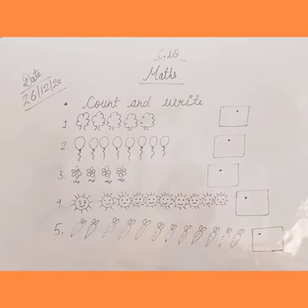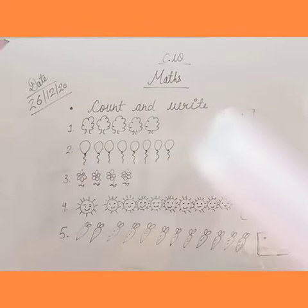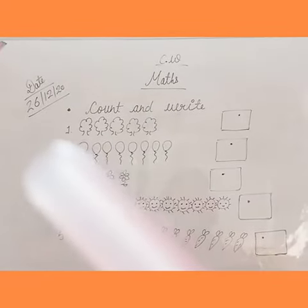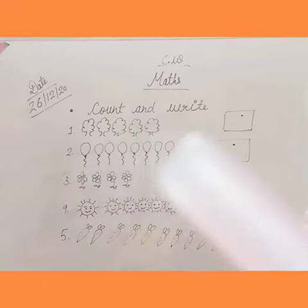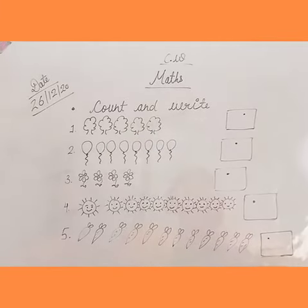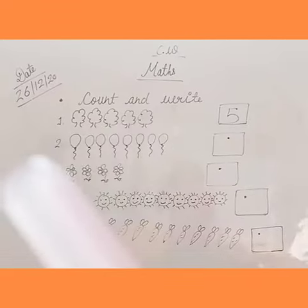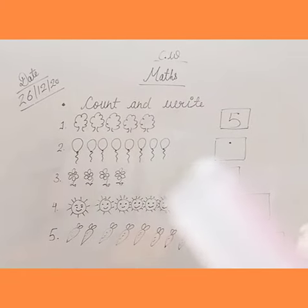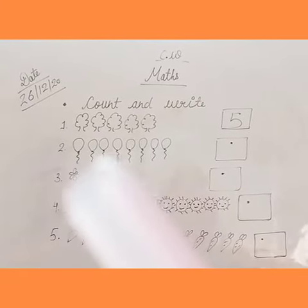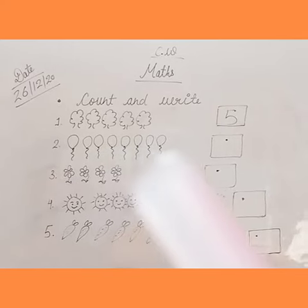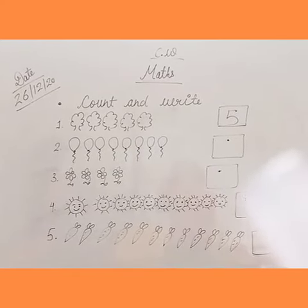Kids, now we will count these pictures and write their correct number in the given box. Start with the first one — tell me, how many trees are given here? Let's count: 1, 2, 3, 4, 5. So here are 5 trees, we will write number 5. Next, how many balloons are given here? Let's count: 1, 2, 3, 4, 5, 6, 7, 8. Here are 8 balloons, so we will write number 8.